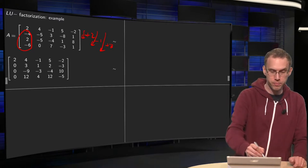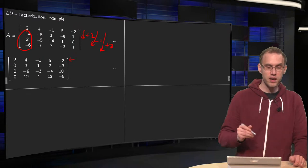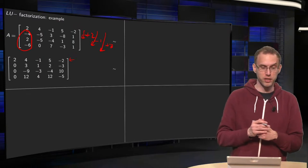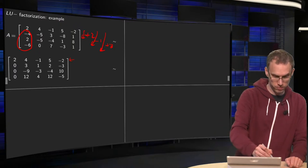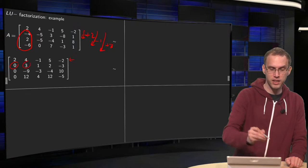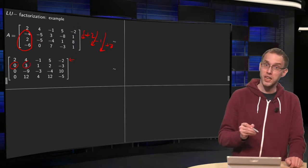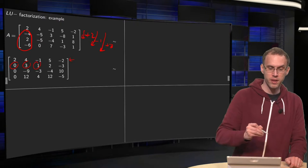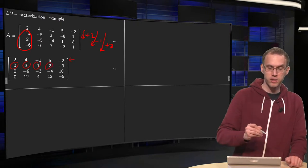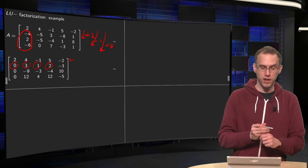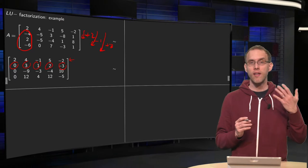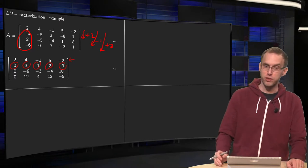The first row remains the same. Then, adding the first row twice to the second row, you get 4 minus 4 equals 0, and 2 times 4 equals 8 minus 5 equals 3. 2 times -1 equals -2 plus 3 equals 1. 2 times 5 equals 10 minus 8 equals 2. 2 times -2 equals -4 plus 1 equals -3. And that's how you find the new second row. You can do the third and fourth row yourself.